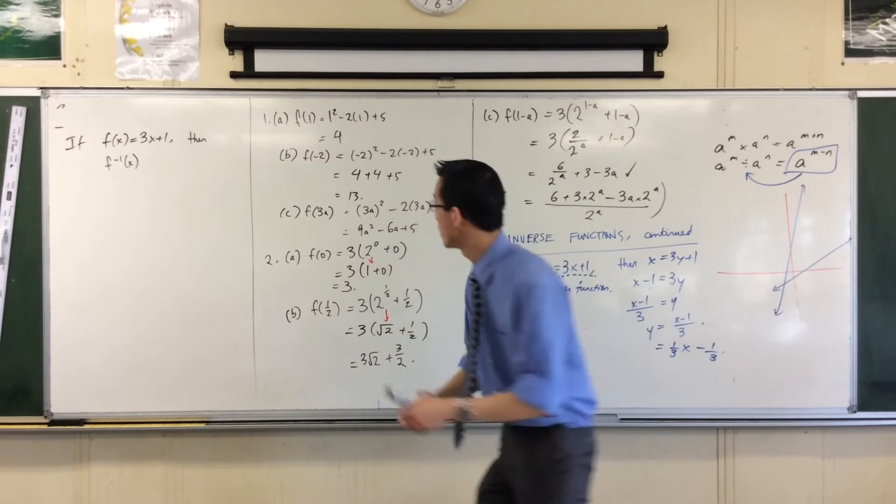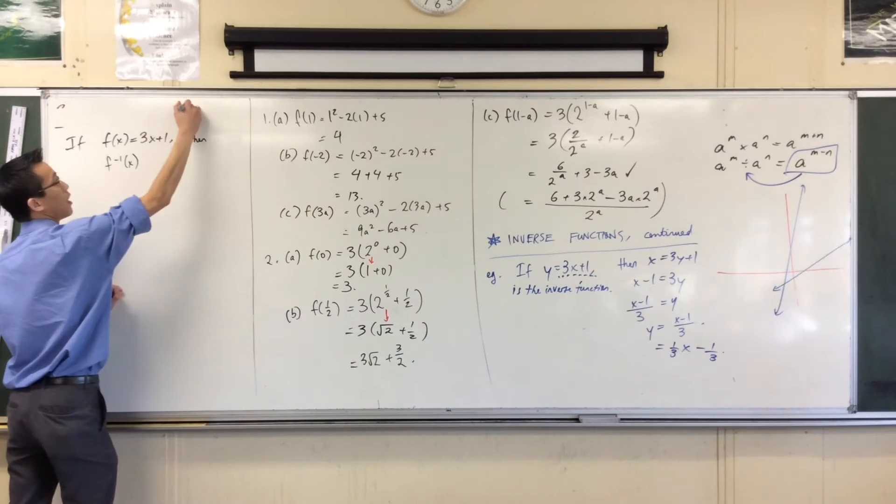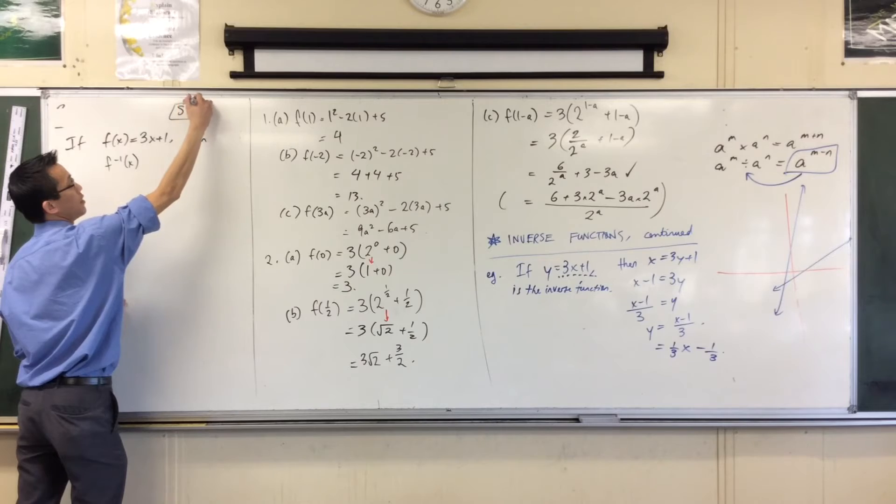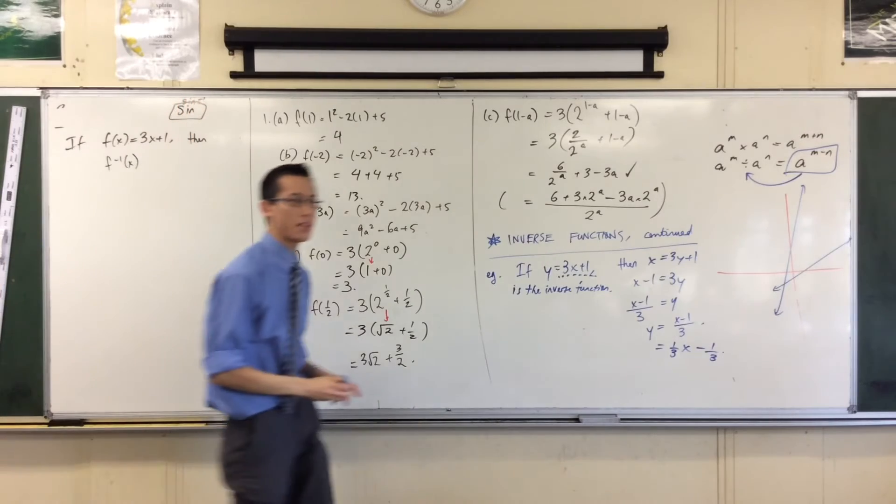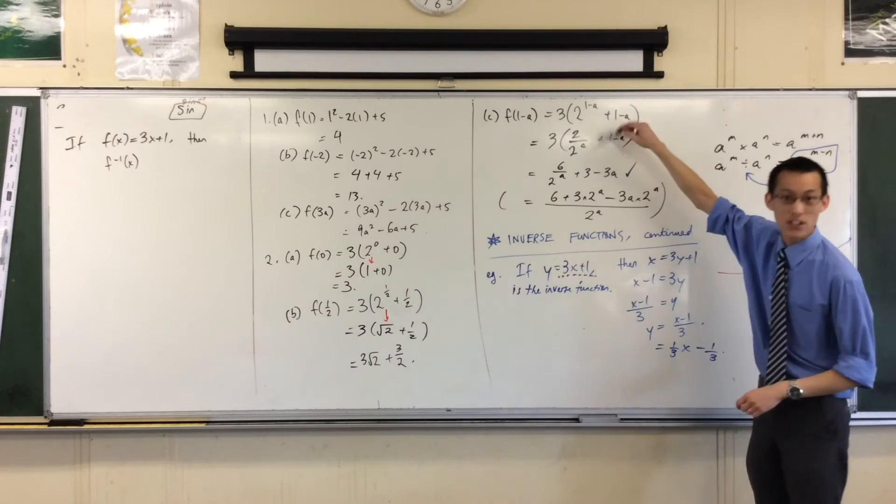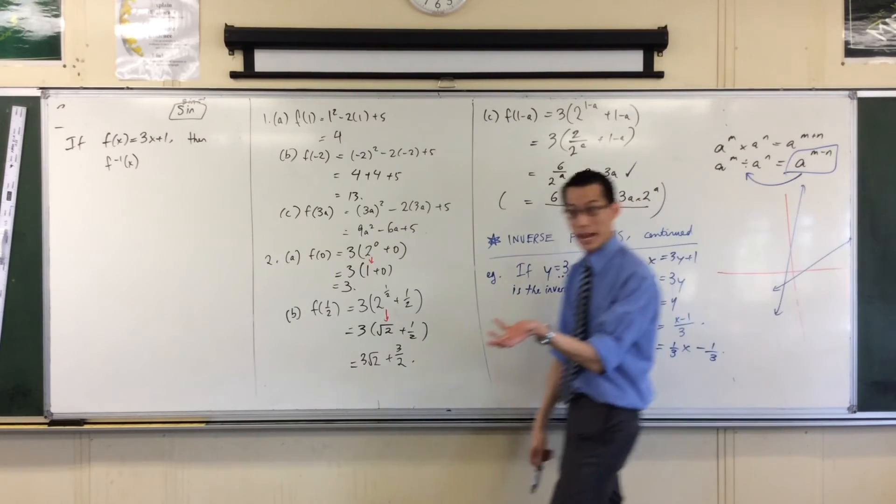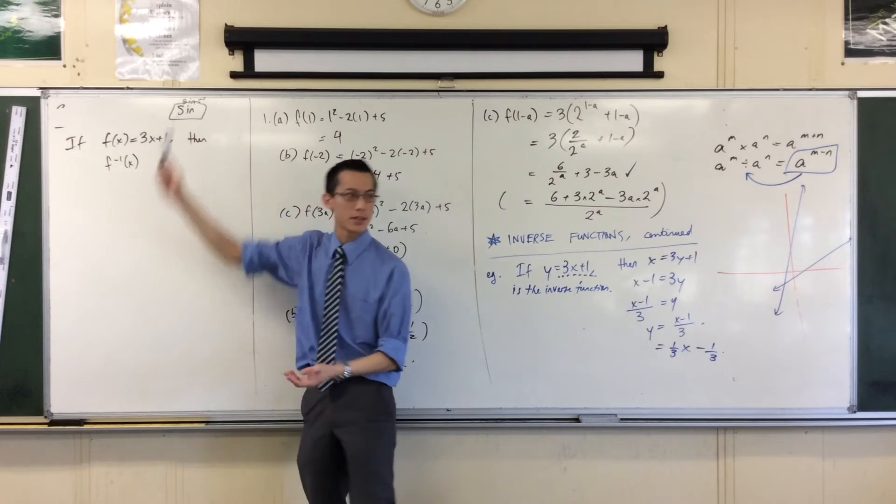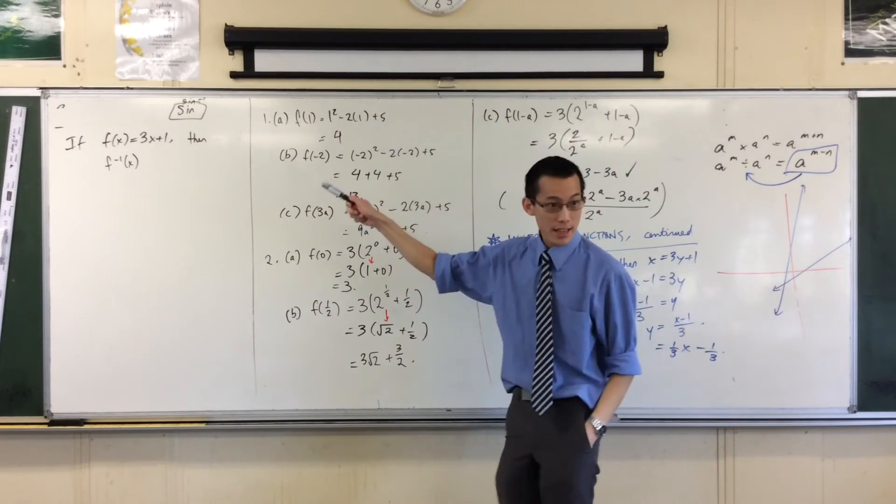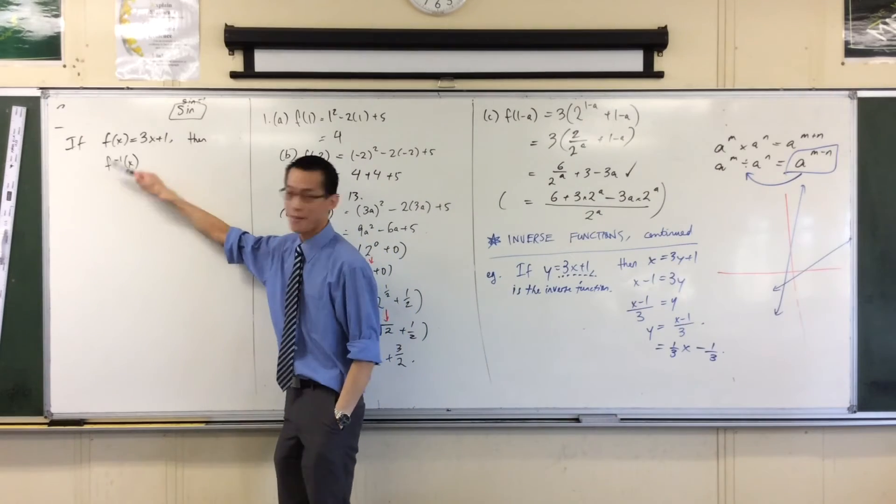On your calculator, you have above sine, cos, and tan. You see, for instance, I didn't really give myself enough space, did I? You see sine, and then there's a minus 1 there. Now, that is not sine to the power of minus 1. It doesn't do, it's not this division thing. In fact, we read that as sine inverse, and cos inverse, and tan inverse...